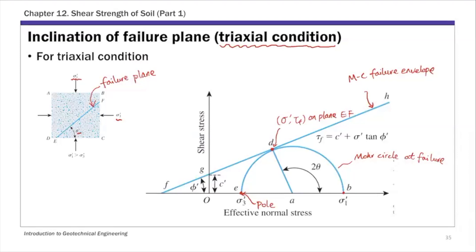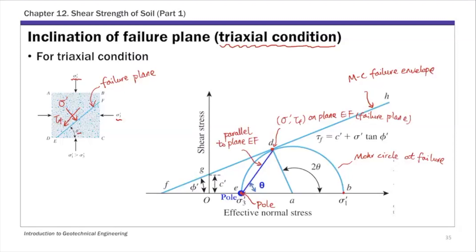The tangent point represents the normal stress and shear stress on the failure plane, sigma prime and tau_f on failure plane ef. If you connect the pole to this tangent point, that line is parallel to the failure plane ef. Recall from the previous lecture, we used this property of the pole to find stress on any plane by drawing a line from the pole parallel to that plane.